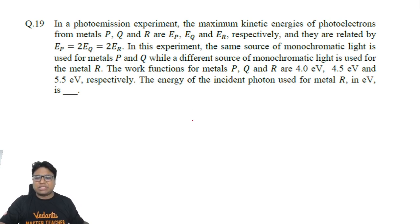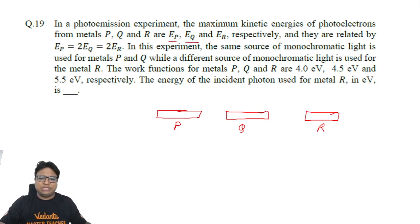In a photoemission experiment, maximum kinetic energy of photoelectrons from metals P, Q, and R. So there are three plates, one is P, one is Q and one is R. Electrons come out of it with a maximum kinetic energy of EP, EQ and ER.